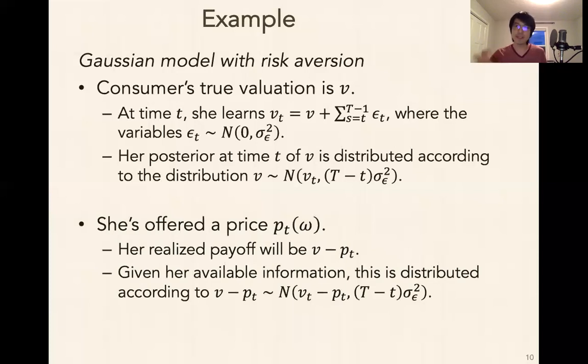So she's offered a price, P of T of omega. And her realized payoff will be V minus P of T. V is this unknown quantity. P of T is this random variable. So the idea is just that this is her realized payoff. But she doesn't know in advance whether or not that will be the case. So given her available information, her realized payoff will be distributed according to this. So V minus P of T is a Gaussian random variable with mean V of T minus P of T in this variance. And that's what's going to be important on the next slide. Her realized payoff is going to be this quantity with this distribution. And then we're going to look at her expected utility from it.